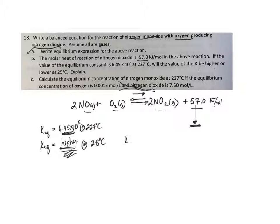So equilibrium constant will be concentration of NO2 squared over the concentration of NO squared times the concentration of oxygen.